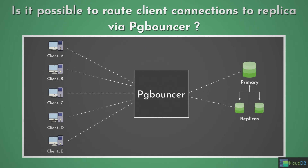Is it possible to route client connections to a replica via pgbouncer? If you have pgbouncer with a streaming replication cluster — one primary and multiple replicas — and you want to route some queries or reports to replicas, the answer is yes. You can route certain queries to read replicas, but you need to configure pgbouncer in a certain way so that the queries are routed appropriately.